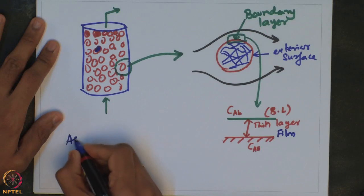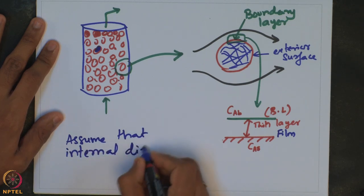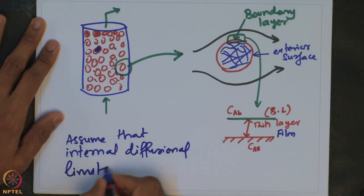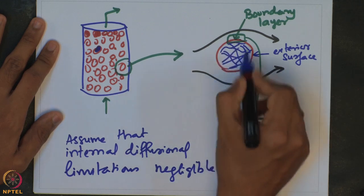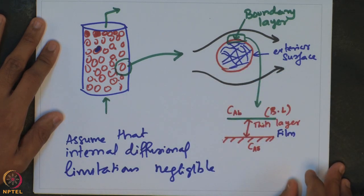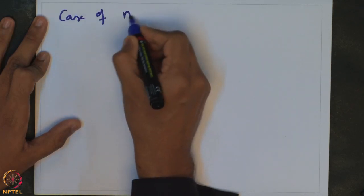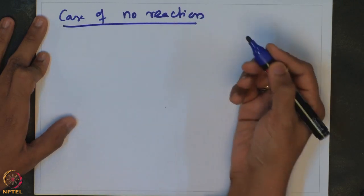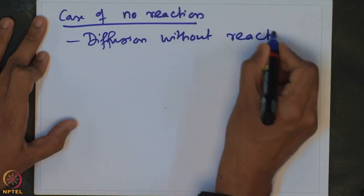Let us assume that the internal diffusional limitations inside the pellet — that is, the diffusional resistance offered for transport of the species in the catalyst pores — is negligible. We will look at how to characterize the concentration changes in this thin layer. In the next few lectures, we will look at how to correlate this when there is reaction and when there is no reaction. Let us take the case of no reaction first — that is, diffusion without reaction.